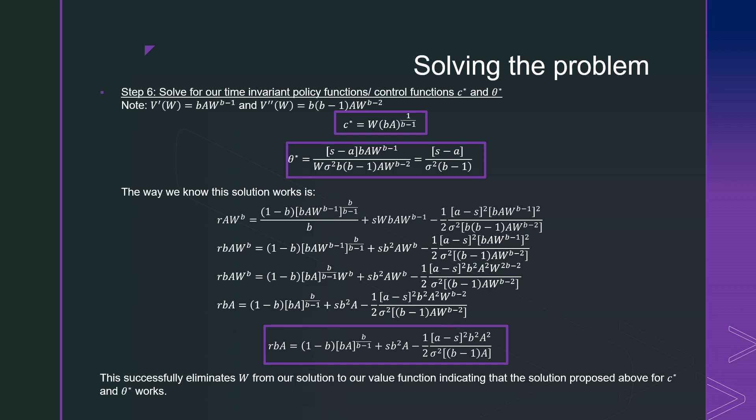This portfolio allocation rule is very important because we see that it is only dependent on the parameters of our problem. Now, if we want to verify that this solution works, we're going to have to work through a lot more algebra, which is detailed on the slide. We plug it in and keep working through it until we see no W terms remaining. Once we successfully eliminate W from our solution, we can say that our value function and proposed solution for C star and theta star works. That is how you finish this problem.